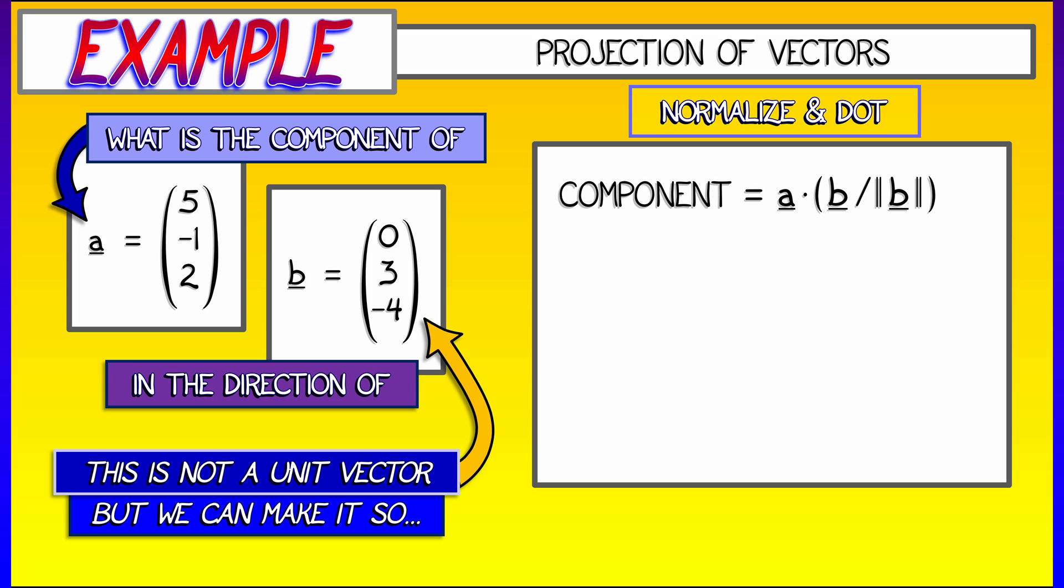This means that this component is really a dot b divided by the length of b. And now this is very easy to compute. The length of b is the square root of zero times zero plus three times three plus negative four times negative four. That gives us the square root of 25, which is equal to five.